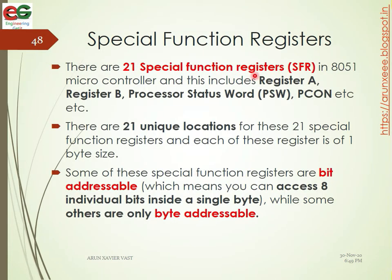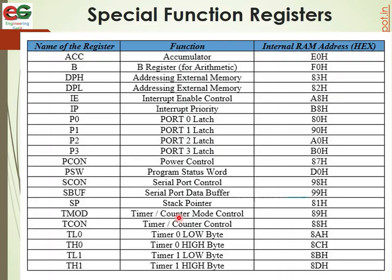There are 21 Special Function Registers and each of these registers is of 1 byte size. Some of these Special Registers are bit addressable, which means you can access 8 individual bits inside a single byte. While some others are only byte addressable.